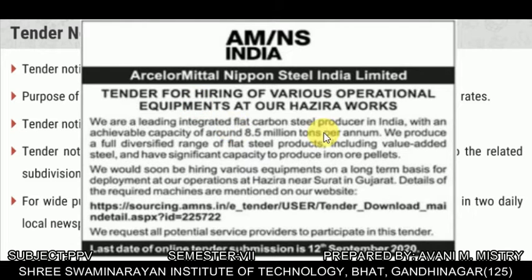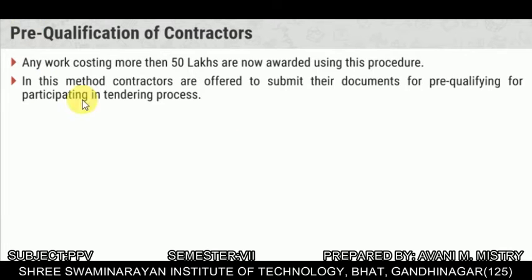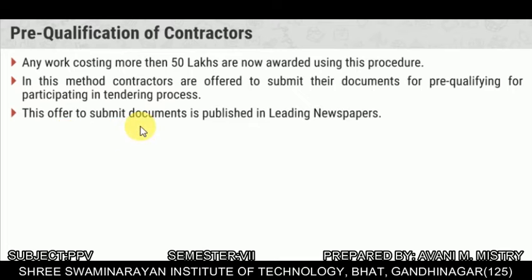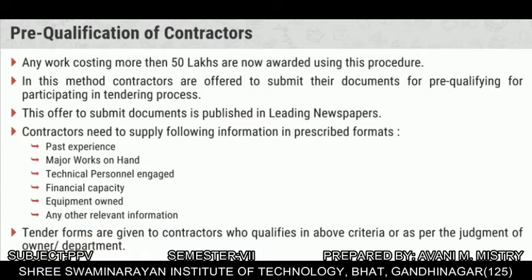Pre-qualification of contractors: for any work costing more than 50 lakhs, this procedure is adopted. Contractors are required to submit documents for pre-qualifying for participation in the tendering process. Technical personnel credentials are given to contractors who qualify in the above criteria as per the judgment of the owner or department. If the cost of the work is very high, fewer contractors will qualify.